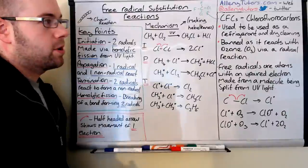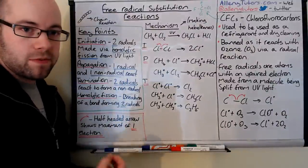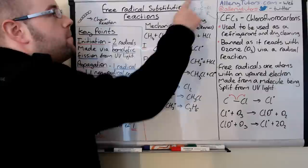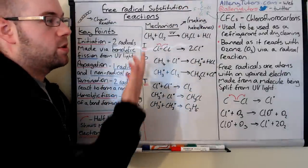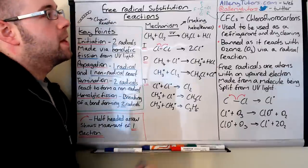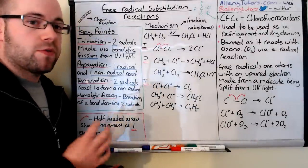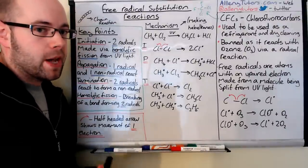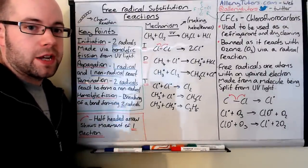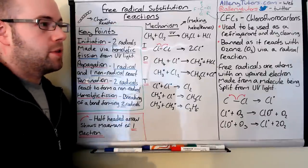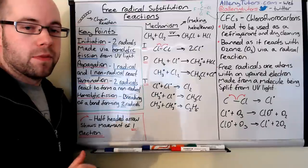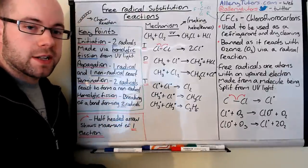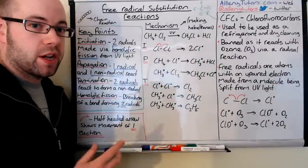This is really important when we look at CFCs — chlorofluorocarbons. An example is 1,1-difluoro-1,1-dichloromethane, which you can simply call difluorodichloromethane. CFCs were used as refrigerants in the back of fridges, and longer chain CFCs were used as dry cleaning agents. We didn't fully know about their effects until scientists started discovering holes in the ozone layer. The ozone layer is O3, and it's the layer that protects us from harmful ultraviolet radiation from the sun. A hole in it allows UV through and increases the risk of skin cancer, so CFCs were banned as refrigerants and dry cleaning fluids.